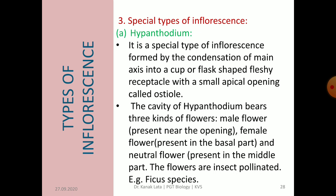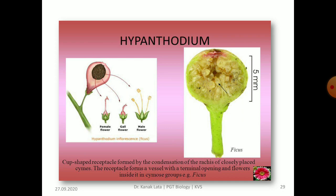Now it is about special types of inflorescence. It is of three types: hypanthodium, cyathium and verticillaster. First is hypanthodium. In this case, the main axis gets condensed into a cup or flask-shaped fleshy receptacle having a small apical opening called the ostiole. The cavity of the hypanthodium contains three types of flowers: male flower, female flower, and neutral flower also called gall flower. The male flower is present near the opening, the female flower is present at the basal part, and the neutral flower is present in the middle part. The flowers are insect-pollinated. For example, it is seen in Ficus species. In the given figure, you can observe the hypanthodium of Ficus and the three different types of flowers — female flower, gall flower and male flower.